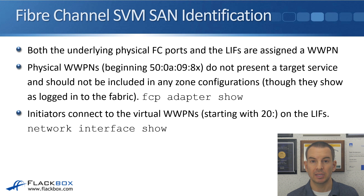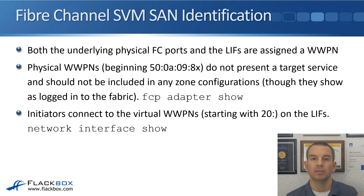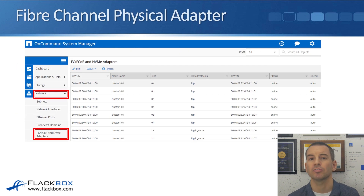The WWPN you need to include in your zoning configuration — the ones the initiators are actually connecting on — are the WWPNs on the LIFs, which start with 20. The command at the command line to see WWPNs on physical ports is 'fcp adapter show'. The command to see WWPNs on the LIFs is 'network interface show'. You can also see this in System Manager.